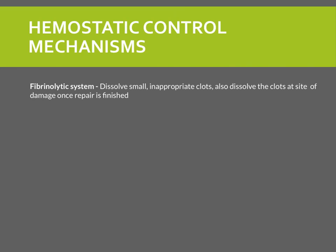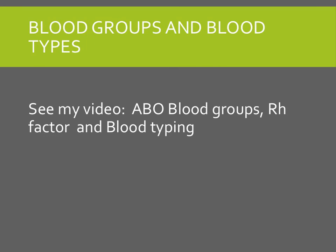The fibrinolytic system is comprised of plasminogen, an inactive plasma enzyme incorporated into a clot when it forms. When plasminogen is activated into plasmin, plasmin dissolves the clot by digesting fibrin. Once the clot is dissolved, the pieces can be taken up by macrophages in the area. The final portion of this chapter covers blood groups and blood types. I have already made a video that goes over all of this, so please see my video on ABO blood groups, RH factor, and blood typing, as I will not be covering them in this video. Thank you so much for watching, and if you have any questions, please write them in the comments.